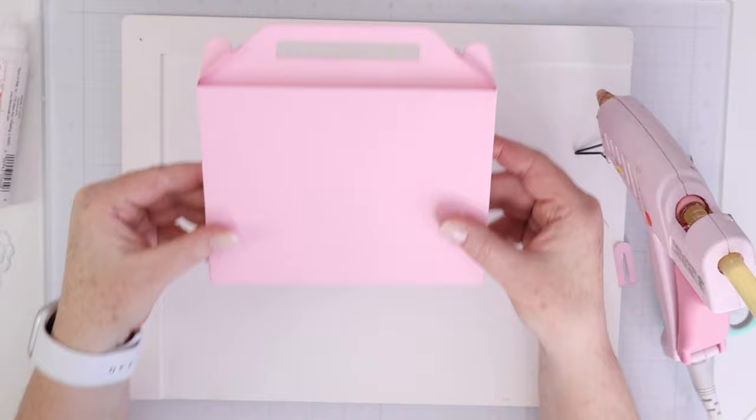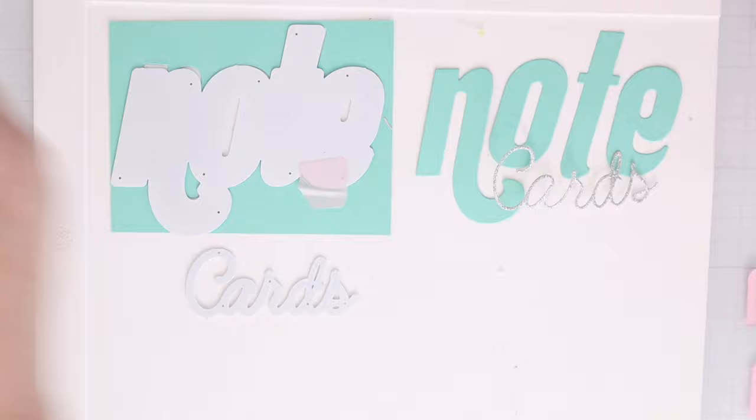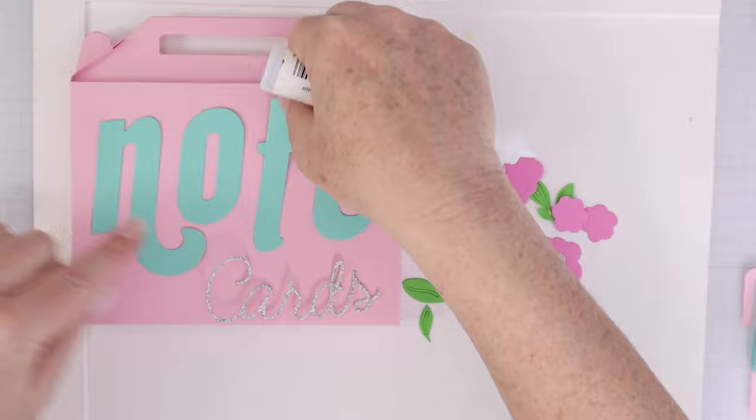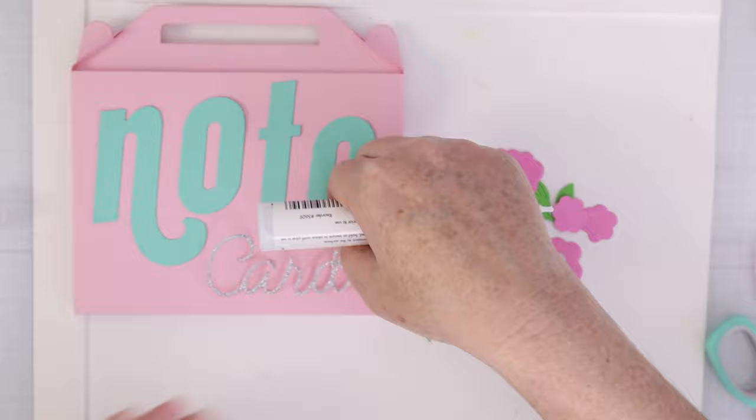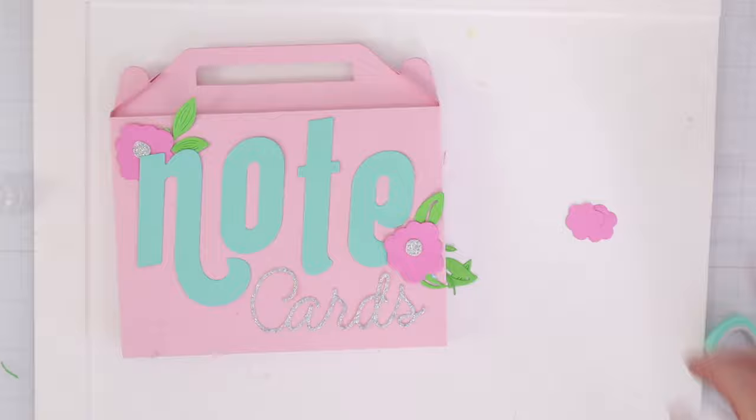The die set also comes with this large note die, large cards die in script. So I cut both of those out as well to decorate the front of this gable box. So this gable box can hold A2 cards in it and you can give it as a gift. There are also some flowers and leaves and stems that come in the gable box die set. So you can use those to decorate the front of your box or the back of your box as well. And you can cut them out of just basic colors of cardstock and use some liquid glue to adhere them down. I did use liquid glue on the note and the cards as well.